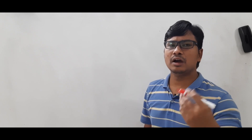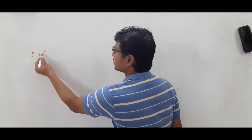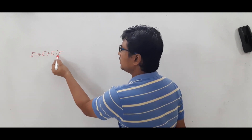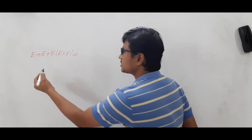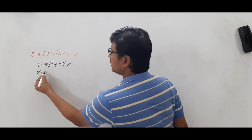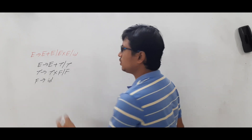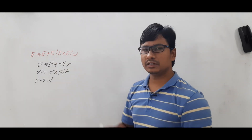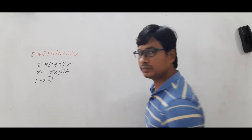In the last video, when we discussed how to convert an ambiguous grammar to unambiguous grammar, we took the grammar E → E+E | E*E | id. I converted it into an unambiguous grammar: E → E+T | T, T → T*F | F, F → id. Now if you look at it, this unambiguous grammar is following a left recursive pattern.